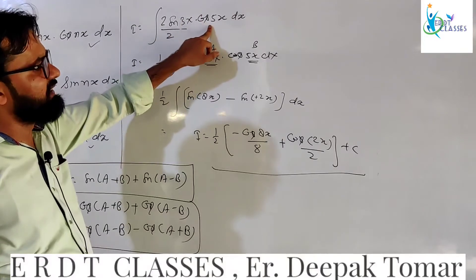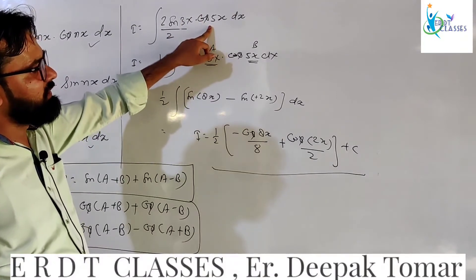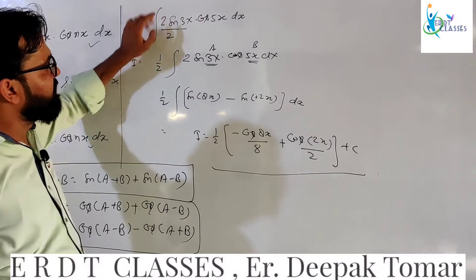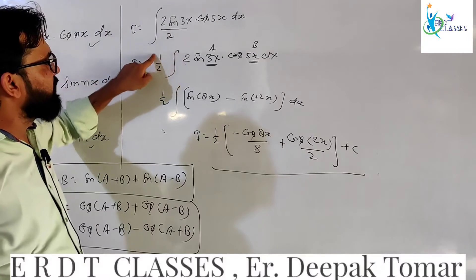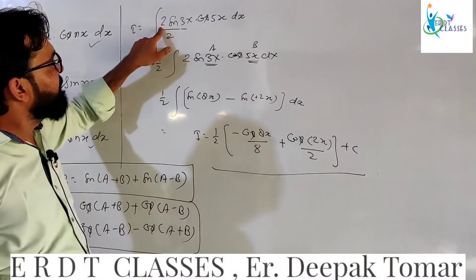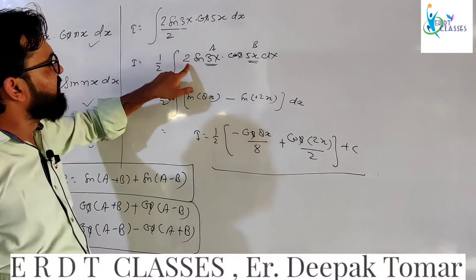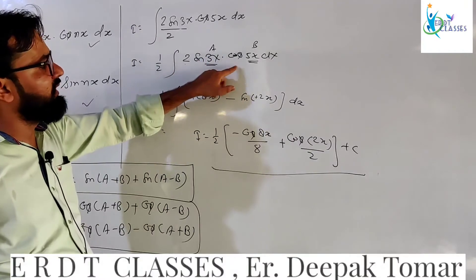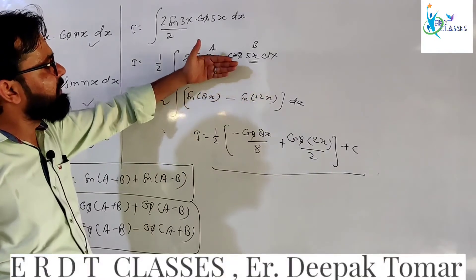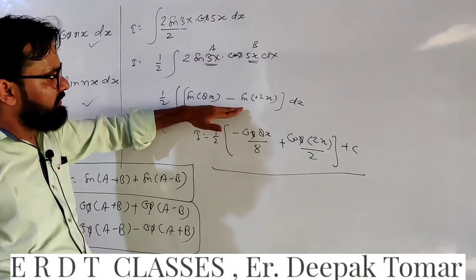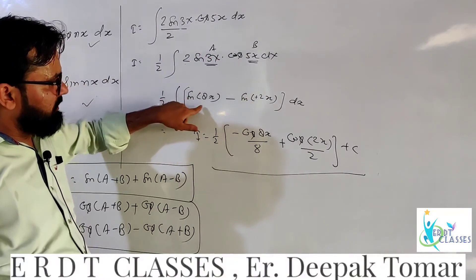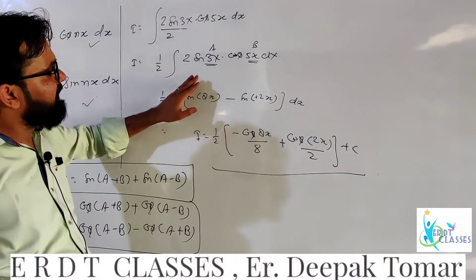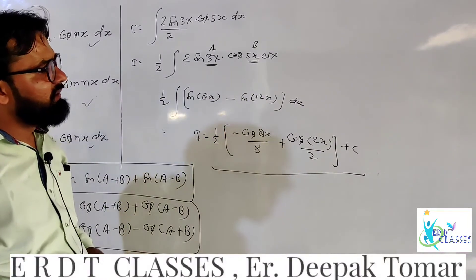So when you have cos A cos B or sin A cos B, the first thing you do is divide by 2 and multiply by 2. Then use the 2 sin A cos B formula to convert the product into a sum or difference form, and then integrate simply.